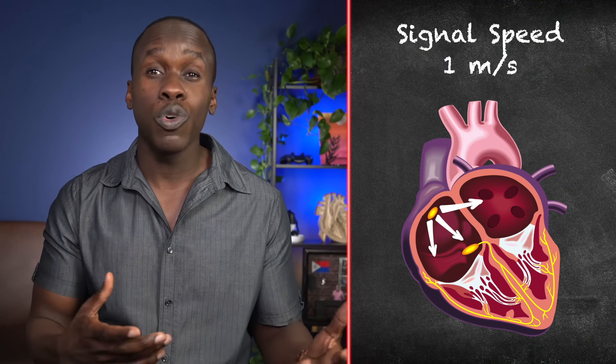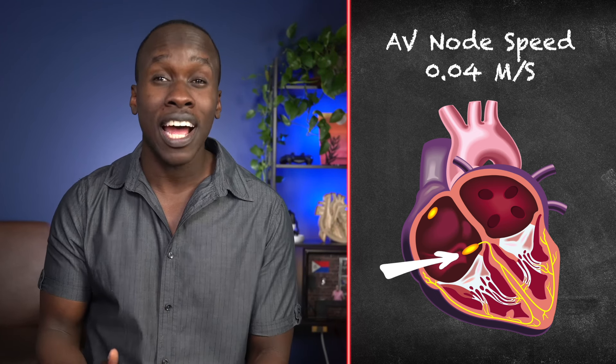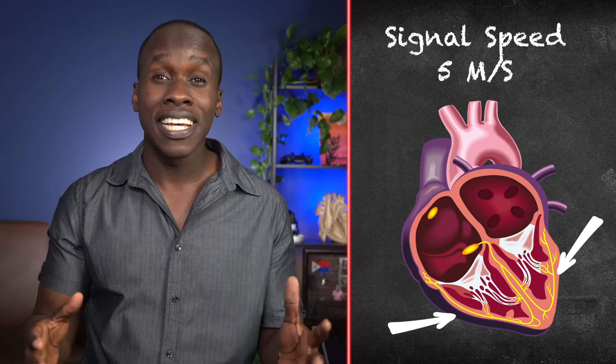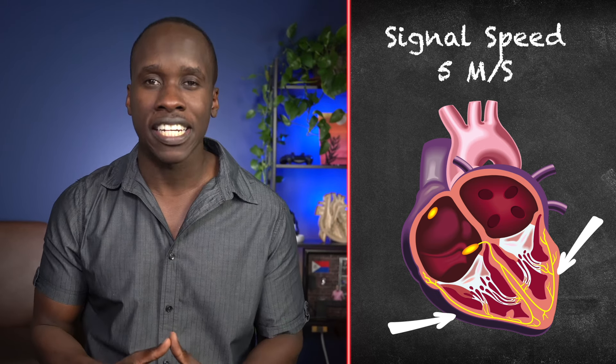Let's talk about another important concept: the speed at which signals travel in different parts of the heart — it's not the same everywhere. When the signal starts at the SA node and spreads to the atria, it moves at around one meter per second. When it reaches the AV node, it slows down to around 0.04 meters per second. Then in the Purkinje fibers, it speeds up again, hitting a whopping five meters per second.